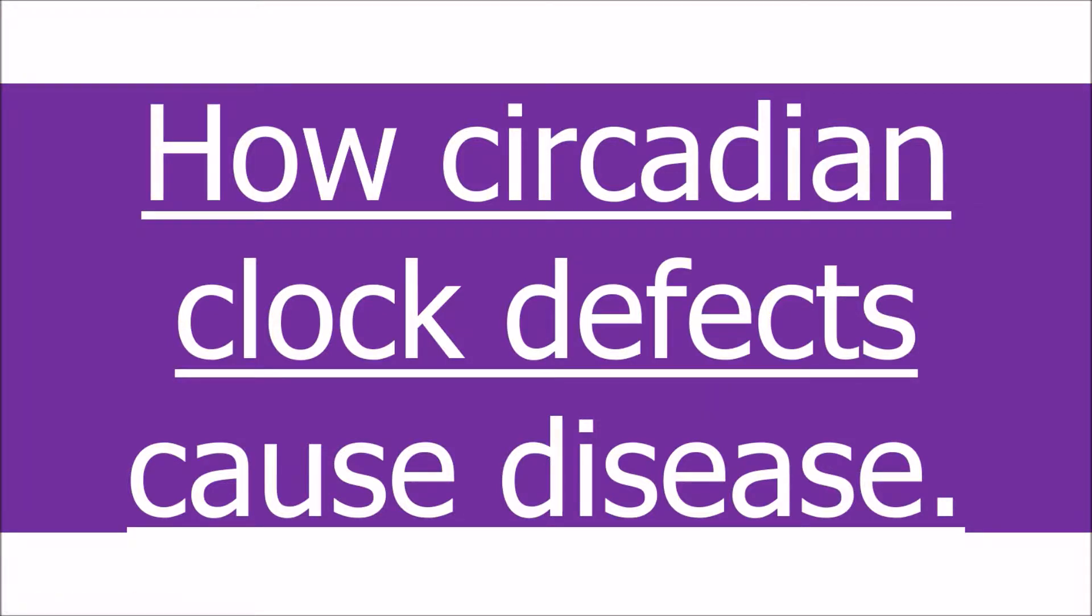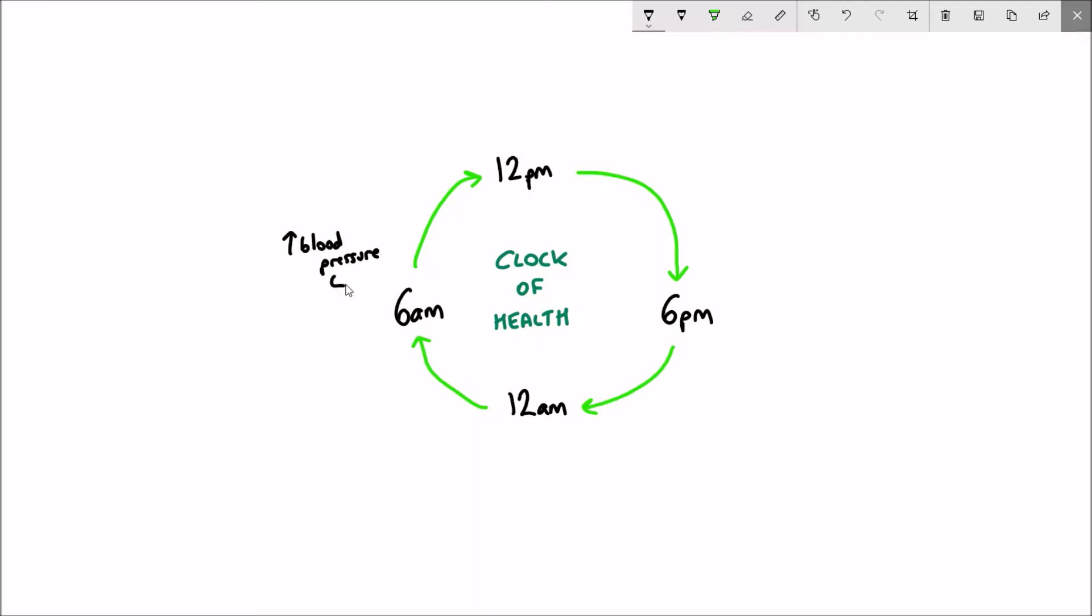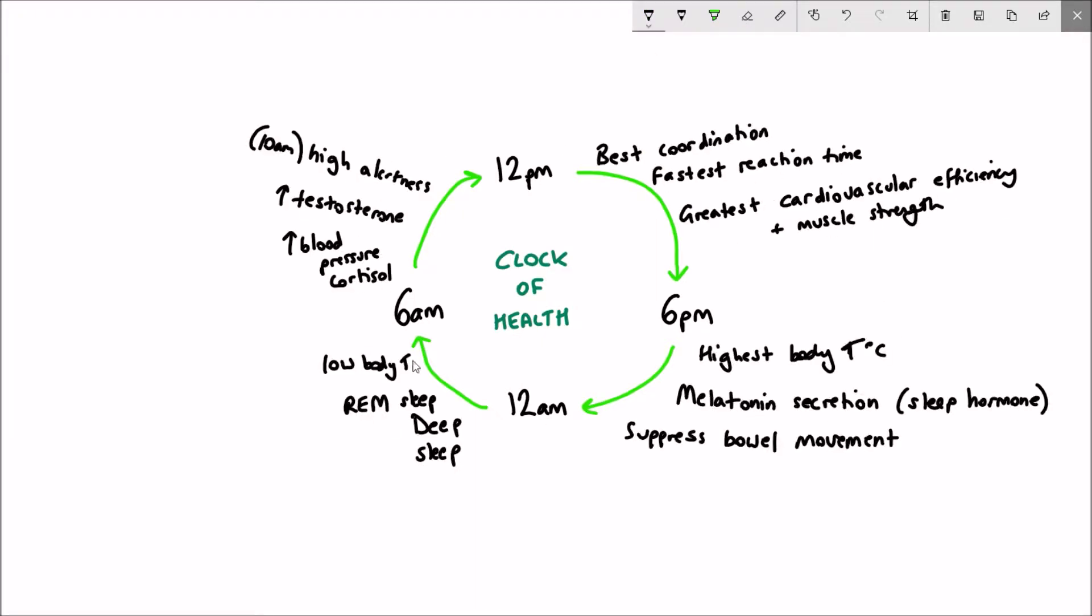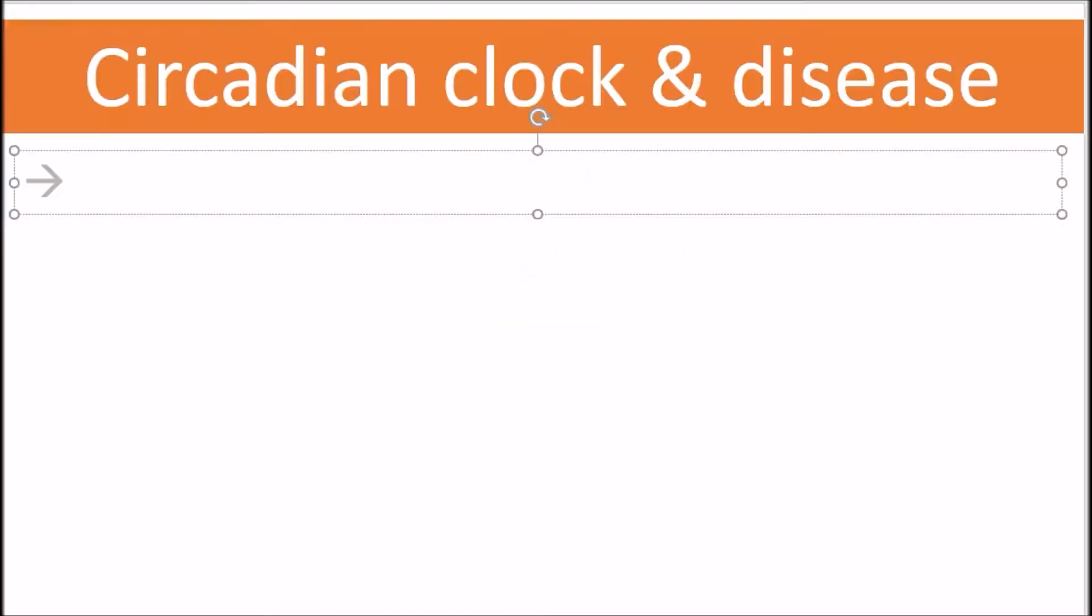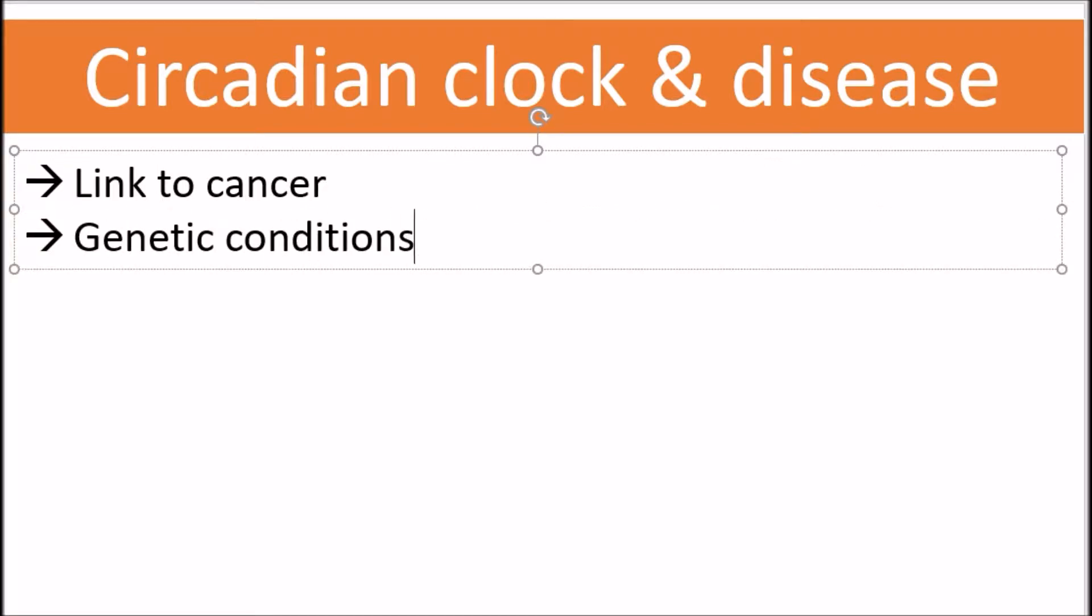In a previous video I introduced the circadian rhythm and talked about the clock of health and the clock of disease. I'll put the link to that video in the description. In this video we'll look at specific examples that show the correlation of the circadian clock to different diseases.